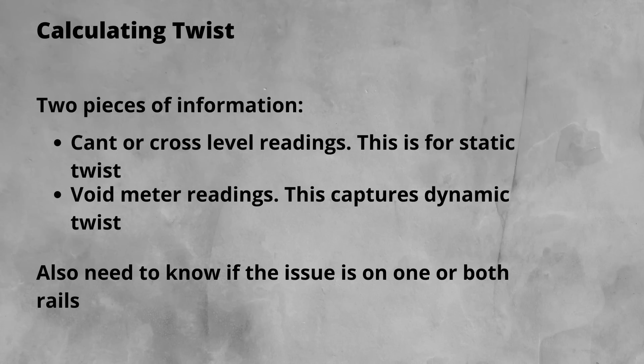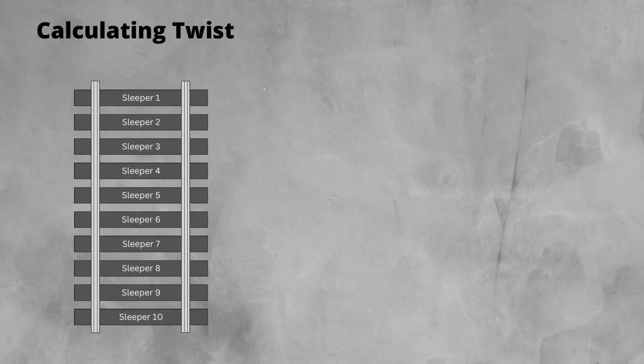A lot of things to worry about, right? So let's break this down into a few examples. Here is a length of track with 10 sleepers. Let's give the rails the name cess and 6ft so we can differentiate easily.